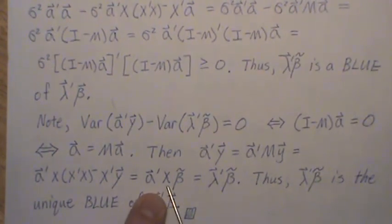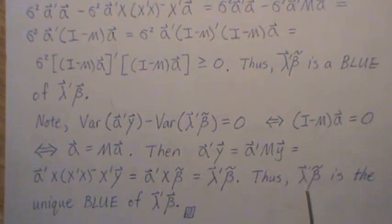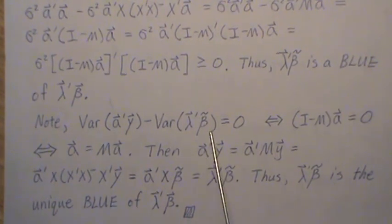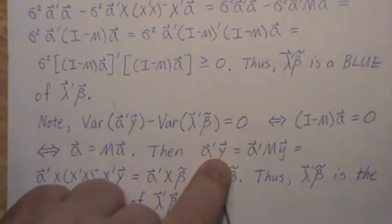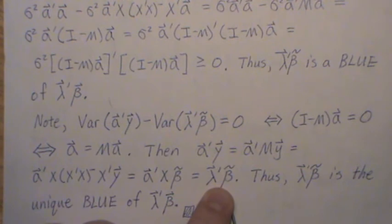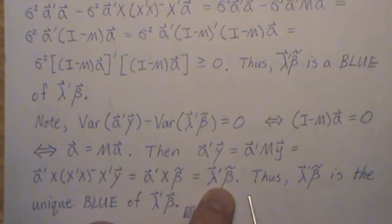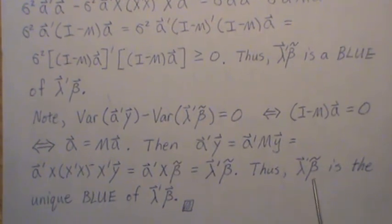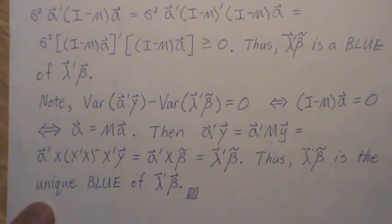a X, because of Theorem 1, is lambda, right? It's estimable. So thus, whenever the variances are equal, that says this linear combination has to be the least squares estimate for this estimable function. So it is a BLUE. Thus, this least squares estimate is the unique BLUE of this function.